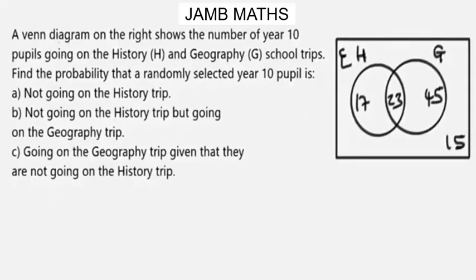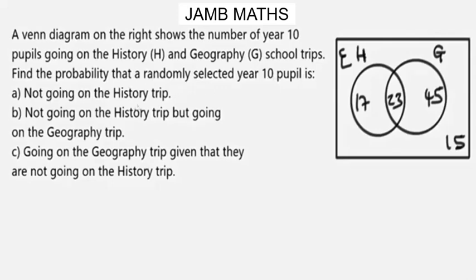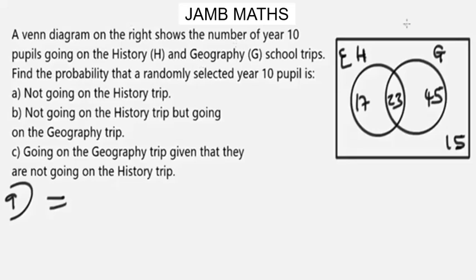Now let's look at this question — a typical probability question we're going to solve using Venn diagrams and sets. The question says: a Venn diagram on the right shows the number of Year 10 pupils going on the history and geography school trips. Find the probability that a randomly selected Year 10 pupil is: (a) not going on the history trip, (b) not going on the history trip but going on the geography trip, (c) going on the geography trip given that they are not going on the history trip.